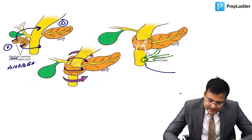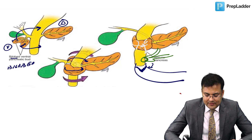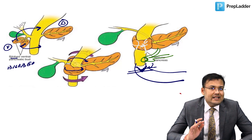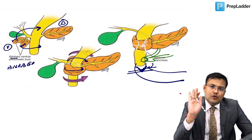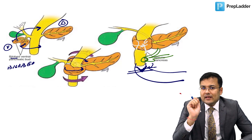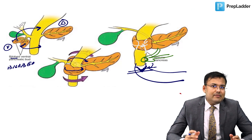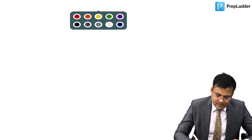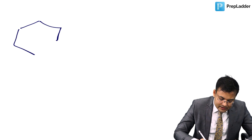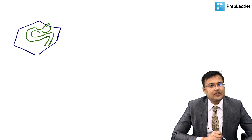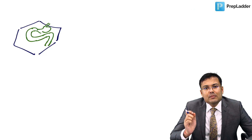In duodenal atresia, the obstruction is distal to the ampulla, so patients have bilious vomiting. Both annular pancreas and duodenal atresia show double bubble sign on X-ray. Normally, gas is found in the fundus of the stomach, first part of the duodenum, and near the DJ junction. In hypertrophic pyloric stenosis, obstruction prevents air beyond the pylorus, giving a single bubble sign.